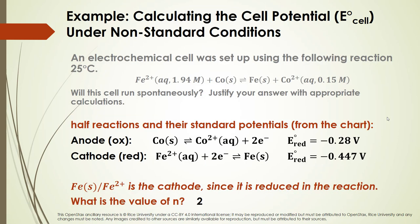Let's look at the half reactions. Iron 2+ cations plus 2 electrons give iron metal — that's the cathode (reduction) half reaction, with a standard reduction potential of negative 0.447 volts. Cobalt metal goes to cobalt 2+ cations plus 2 electrons — that's the anode (oxidation) half reaction, with a standard reduction potential of negative 0.28 volts. Both values come from the chart.